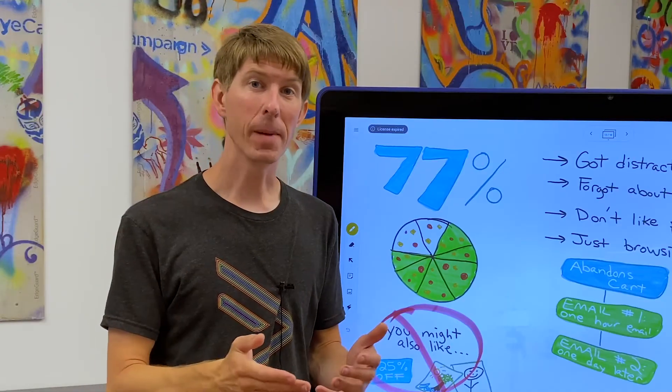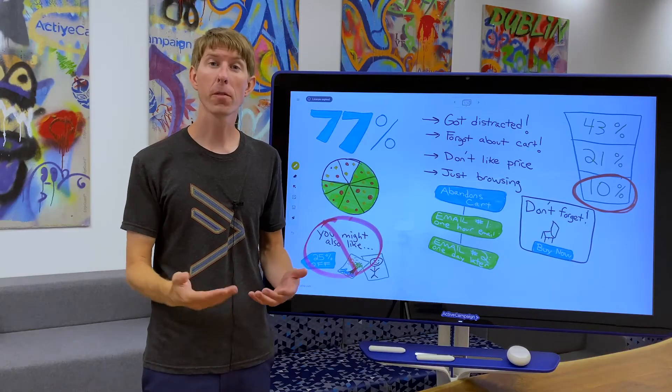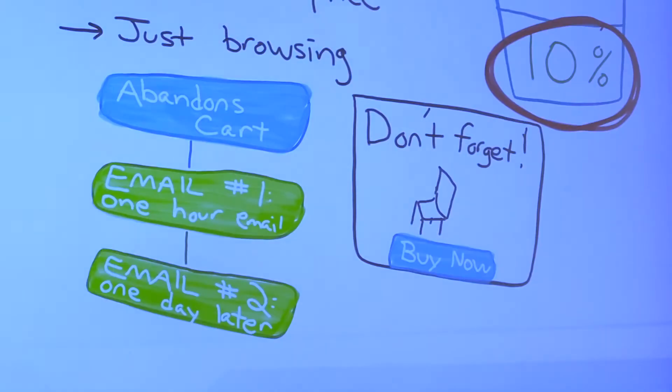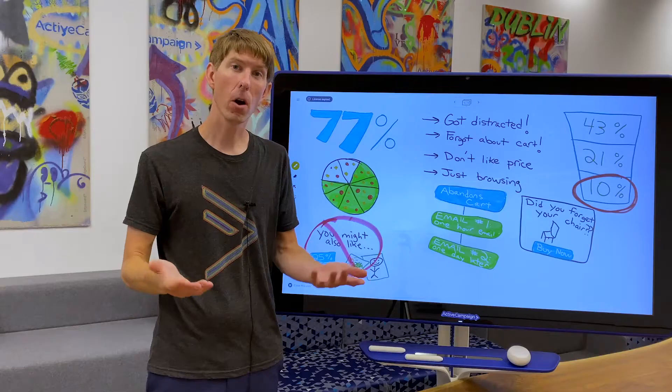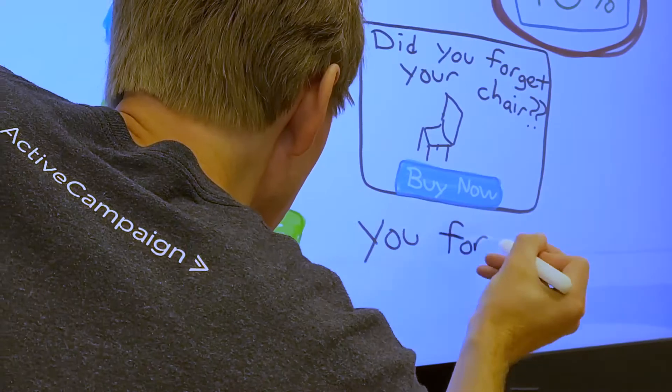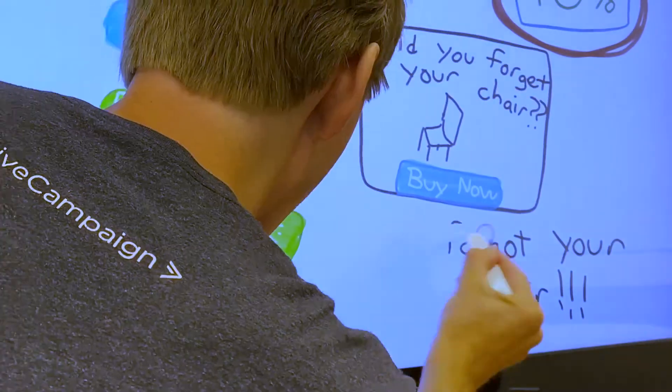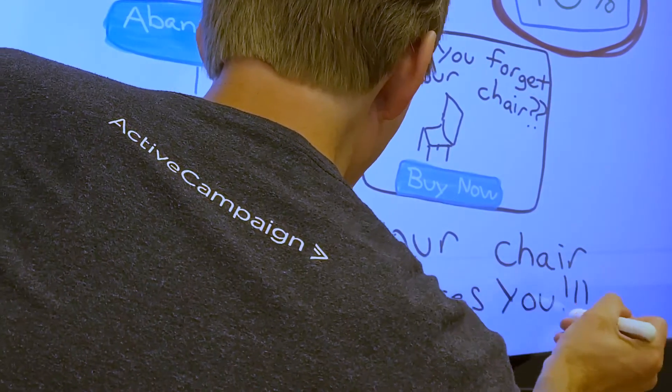With the second email, you have more possibilities. Did someone open your first email but not convert? Tweak the email content. Highlight a different benefit or offer social proof. Did someone fail to open your email entirely? Consider resending your first email with a different subject line.